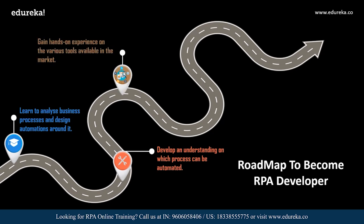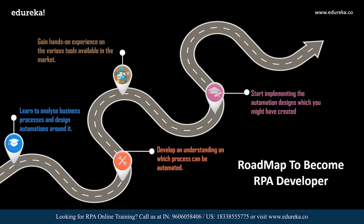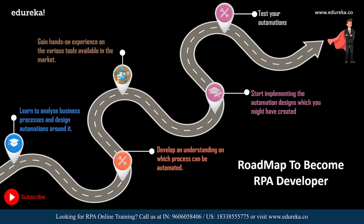Not all client tasks can be automated, so you must understand which processes are automatable. Once clear on that, get hands-on experience in the top available tools — choose whichever tool suits you best and benefits you most. Then start implementing the automation solutions you've designed, bringing your process document to life on the tool. After designing and testing your automations successfully, deploy to production. Start small with simple automations, and gradually build up to larger ones as you become comfortable with the tool's functionalities.